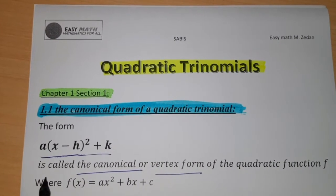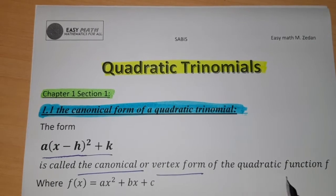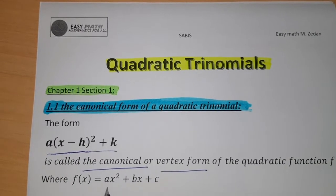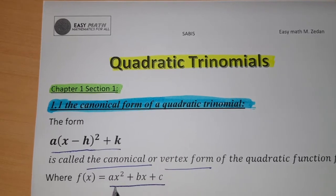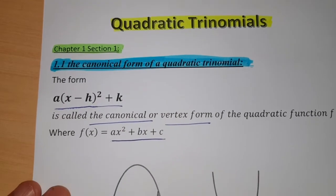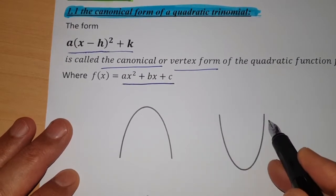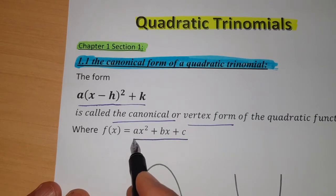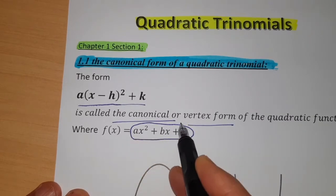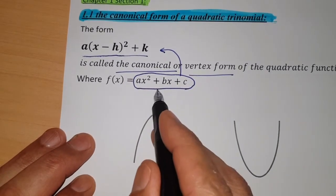x minus h all squared plus k is called the canonical form or vertex form of the quadratic function f, where f(x) = ax² + bx + c is called the general form. This function is graphically represented by a curve called the parabola. Today we will focus on converting the general form into the canonical form.